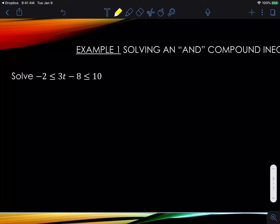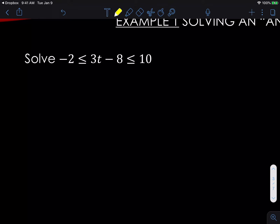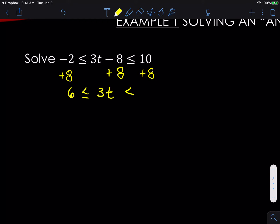Notice if you look at this, we've got in the middle of the statement — let's read the whole statement first. It says negative 2 is less than or equal to 3T minus 8, and that is less than or equal to 10. We're trying to get T all by itself, so we're going to use the same algebraic steps. The first step is to add 8 to everything: add 8 here, add 8 here, and add 8 here. Negative 2 plus 8 is 6, less than or equal to 3T — because negative 8 plus 8 is zero — and less than or equal to 10 plus 8, which is 18.